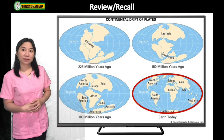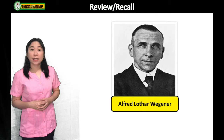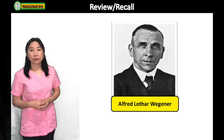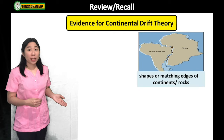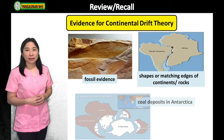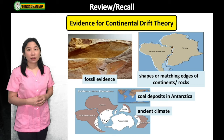Alfred Wegener, the originator of the Continental Drift Theory, identified several evidence to support his claim that continents are drifting. These evidence are shapes or matching edges of continents or rocks, fossil evidence, coal deposits in Antarctica, ancient climates, and glacier carvings.